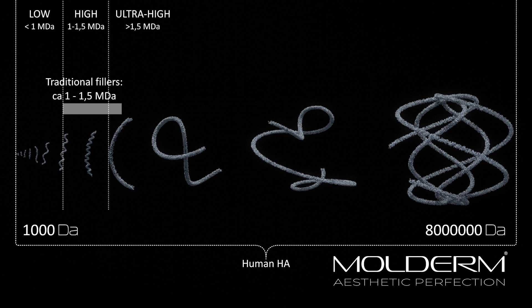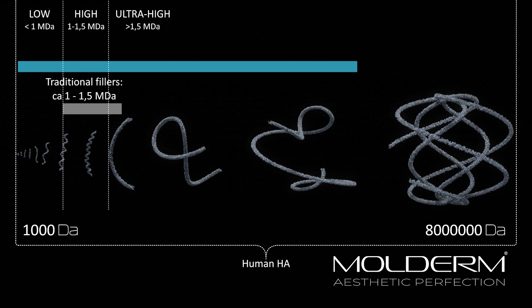But now, thanks to Molderm, we are closer than ever to the human vast span of molecules. Molderm stretches from around 4,000 Daltons to 6 million Daltons, which, as you can see, is very far into the ultra-high spectrum.